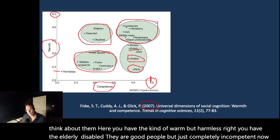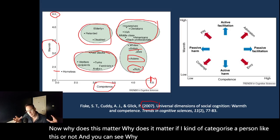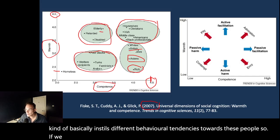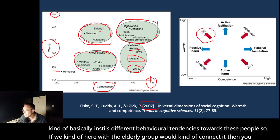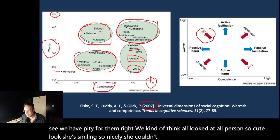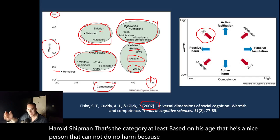Now, why does this matter? Why does it matter if I categorize a person like this or that? And you can see why it matters because it basically instills different behavioral tendencies towards these people. If the elderly group would connect here, then you can see we have pity for them. We think, oh look, that old person, so cute, she's smiling so nicely, she couldn't do anyone any harm. Think of Harold Shipman. That's the category, at least based on his age, that he's a nice person that can do no harm because he's old. And hence, he is not a threat. He's too incompetent to be a real threat.